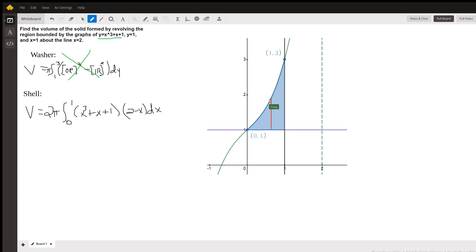And so the height of that shell for any x in the interval from 0 to 1 is given by x cubed plus x plus 1. And that's what this is right here. This is the height of this typical cylindrical shell.